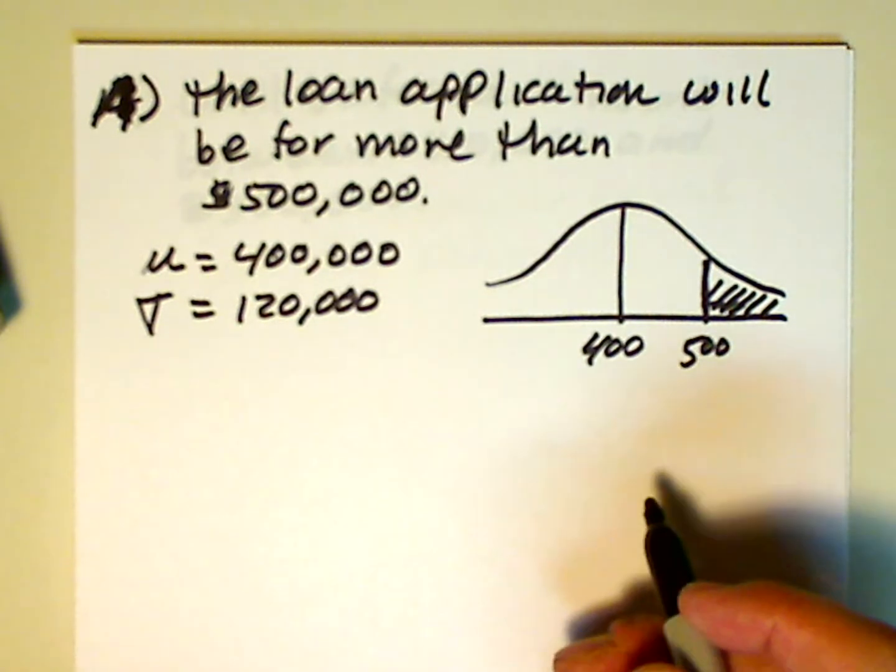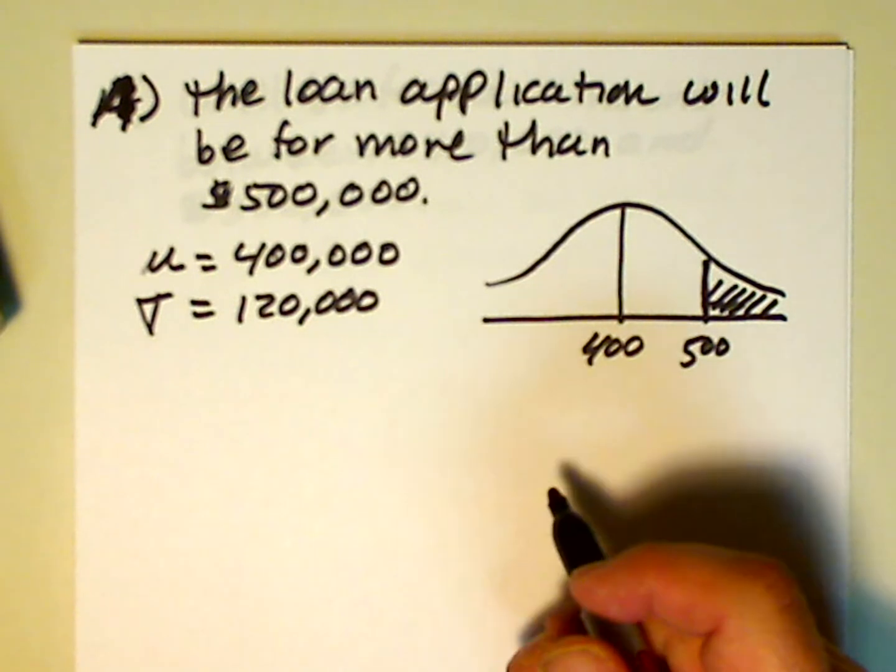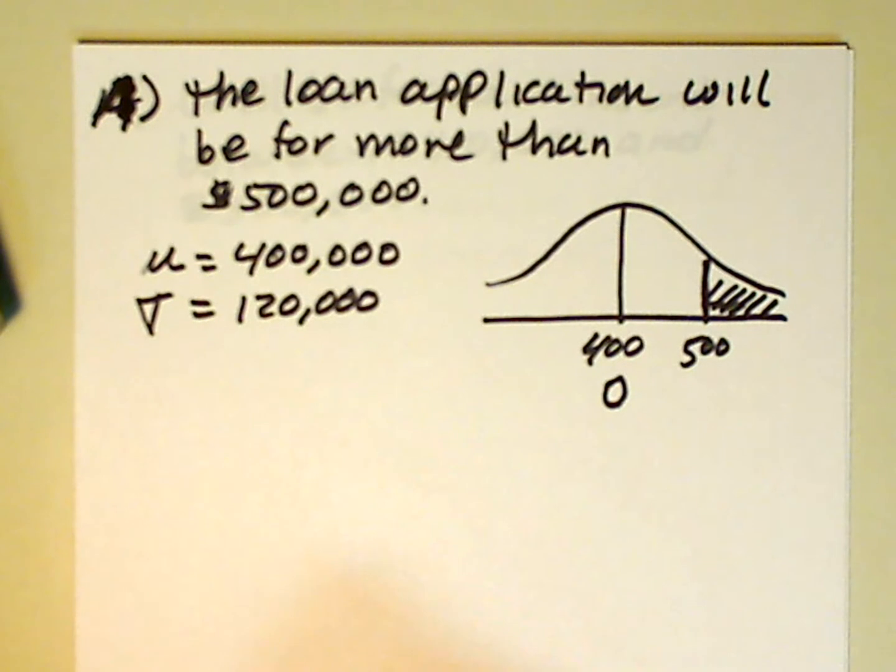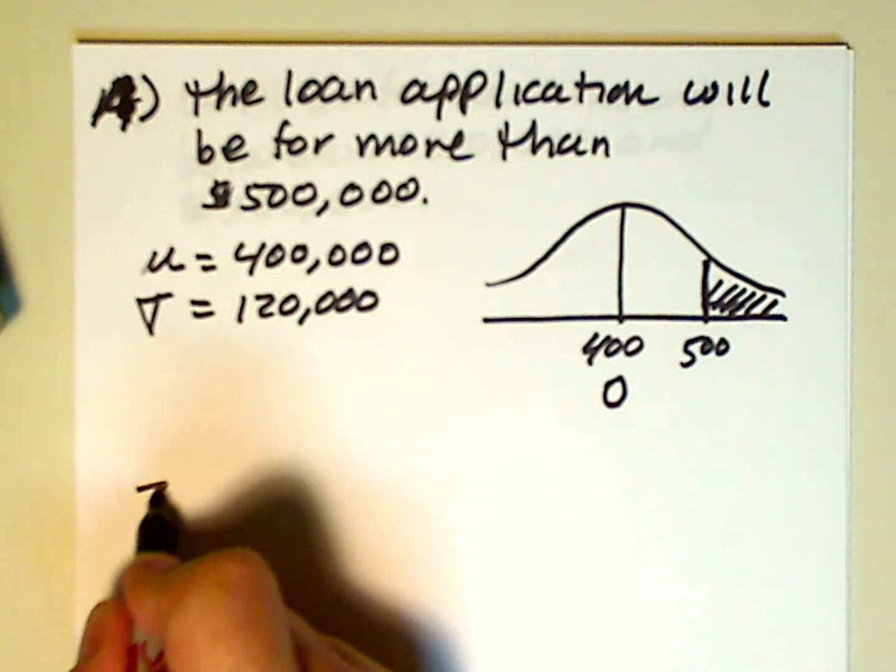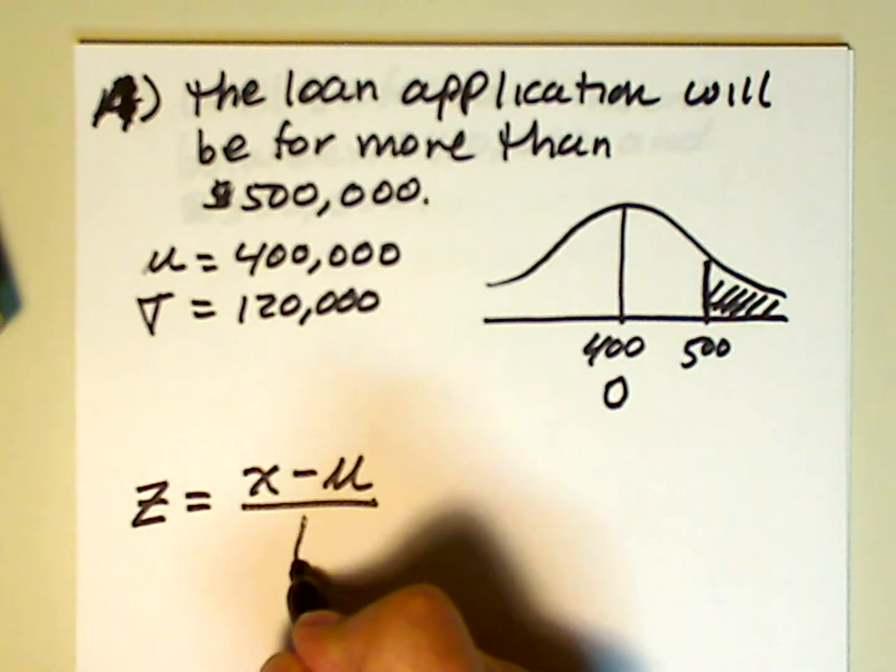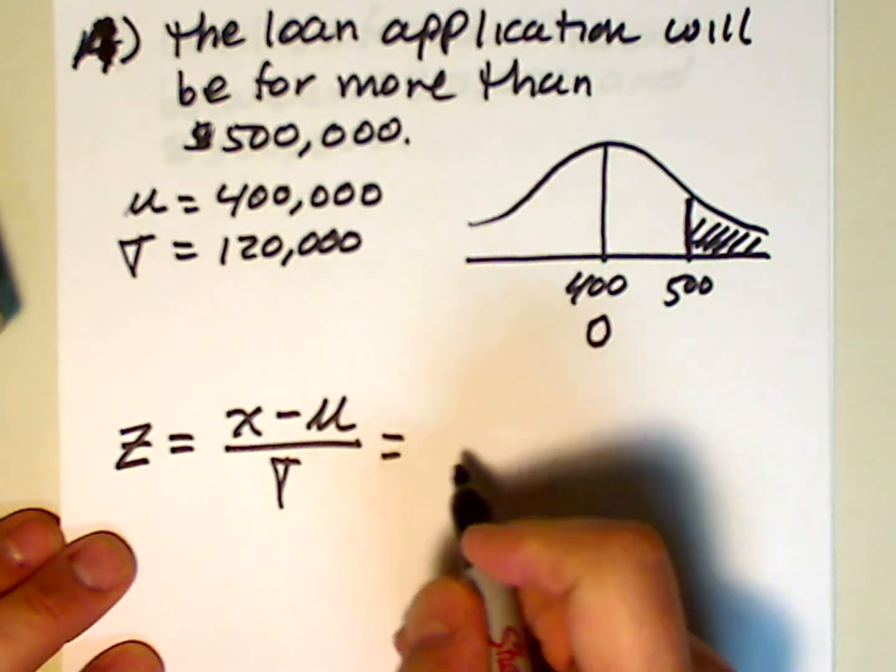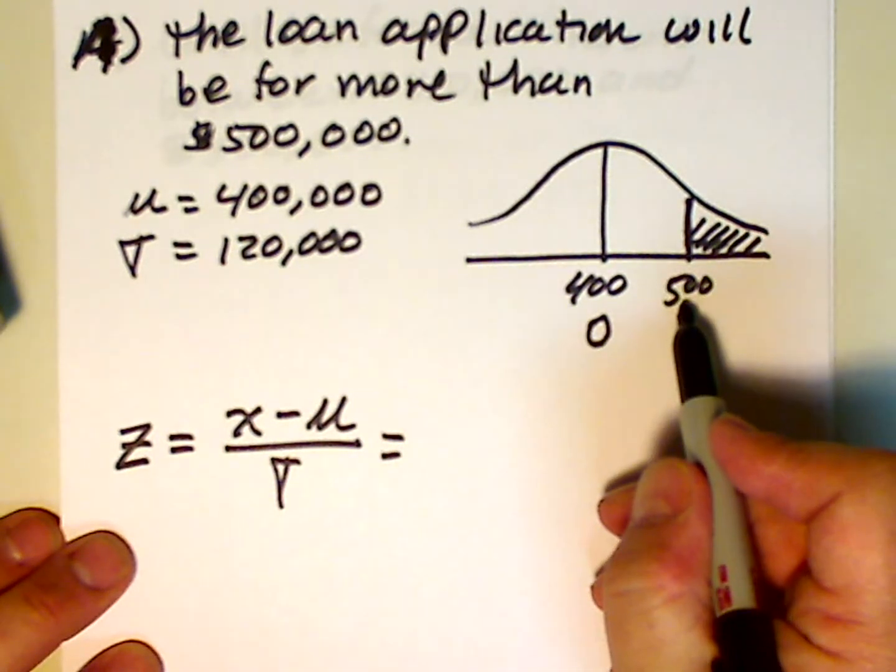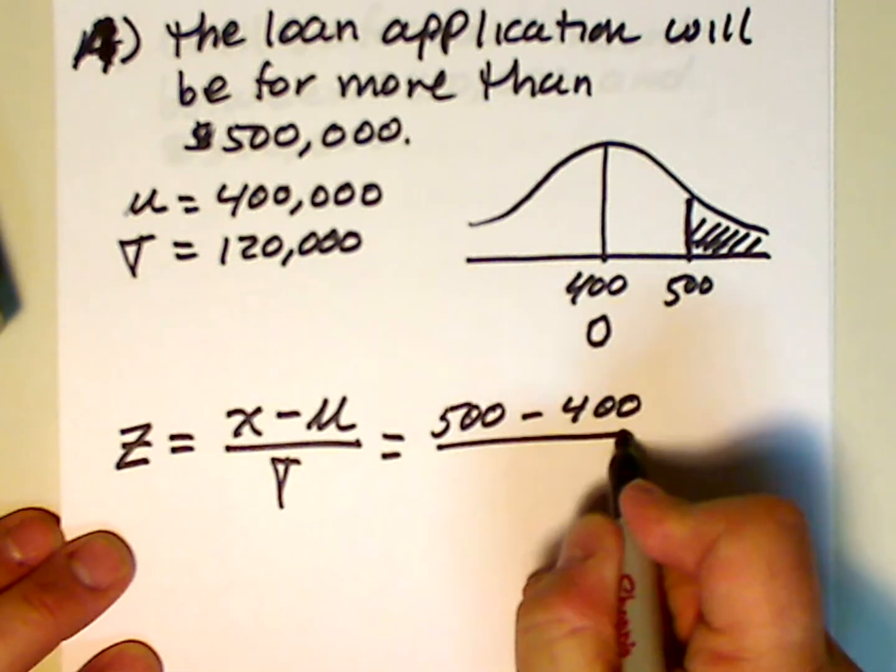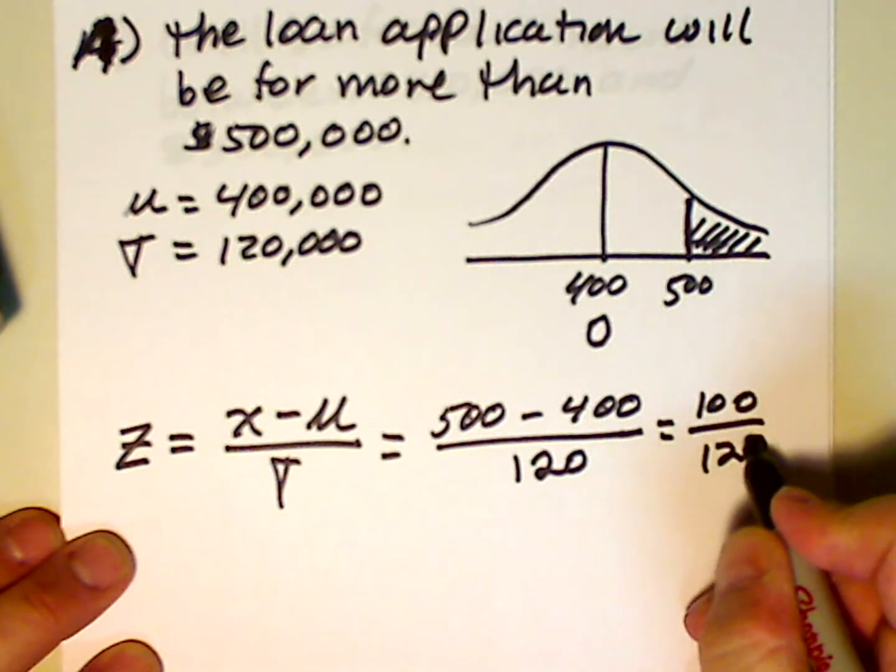So in order to solve this problem, we're going to transform this into the standard normal distribution. The standard normal distribution has a mean of 0 and a variance of 1. And there's an equation for the transformation. It's z = (x - μ) / σ. Let's do that math now. So this is the x value in which we're interested, the $500,000. μ is $400,000. And we're dividing by 120,000. It's equal to 100 over 120.